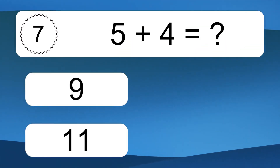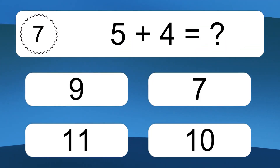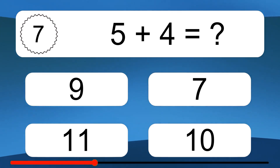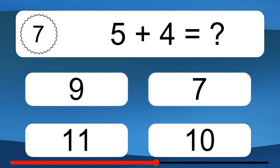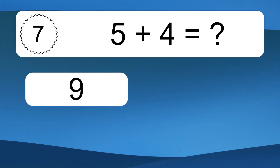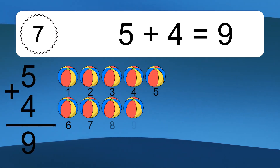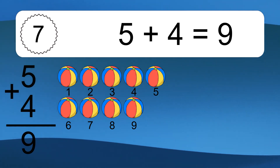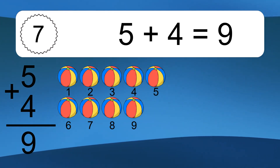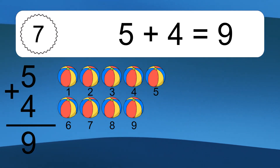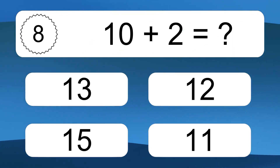5 plus 4 equals what? 5 plus 4 equals 9. Let's count it. 1, 2, 3, 4, 5, 6, 7, 8, 9.